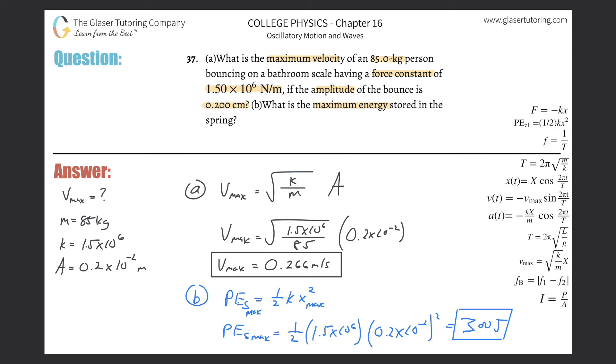At some point on the spring, the velocity will be zero and therefore there's no kinetic energy. Where did that energy go? It went to potential energy—potential energy of the spring.